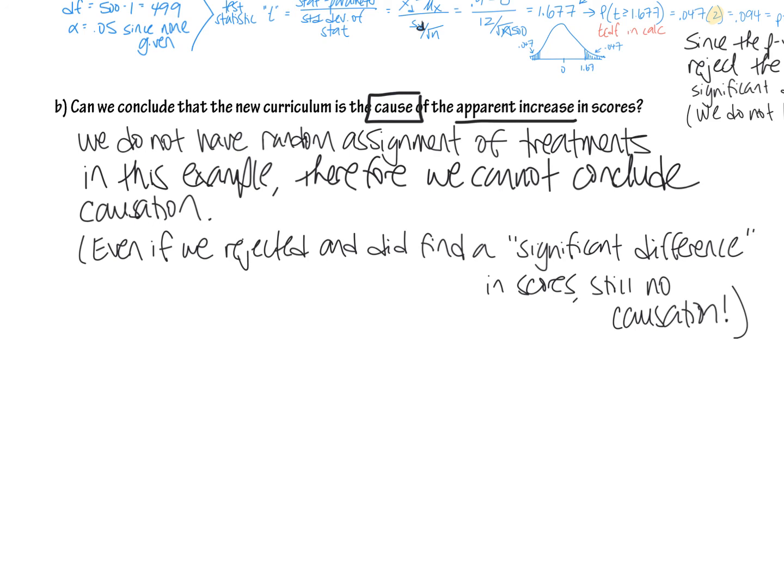And just make a note to yourself, even if we rejected the null and even if we did come up with a significant difference in post-test minus pre-test and our test said something like, oh, we do think that the scores have increased due to the new math curriculum. Because we do not have random assignment, we still could not say that it is a cause. We would just say for some reason, there is some sort of a correlation here, but we would have to do a more controlled experiment in order to use that word cause.